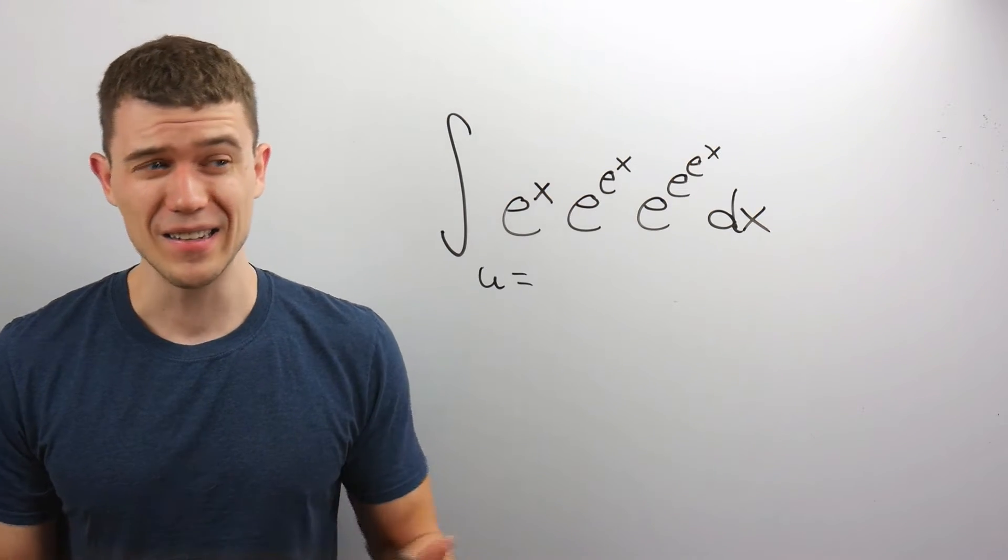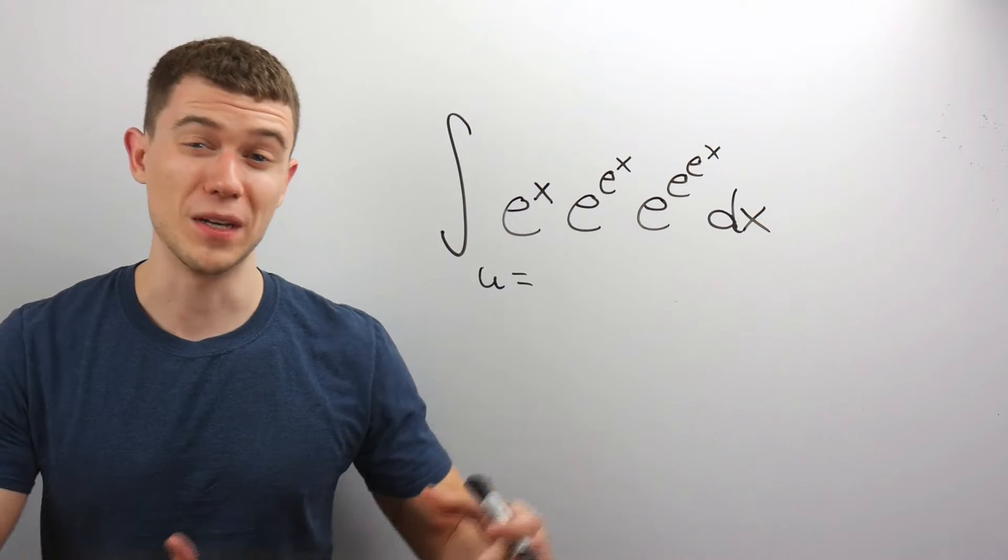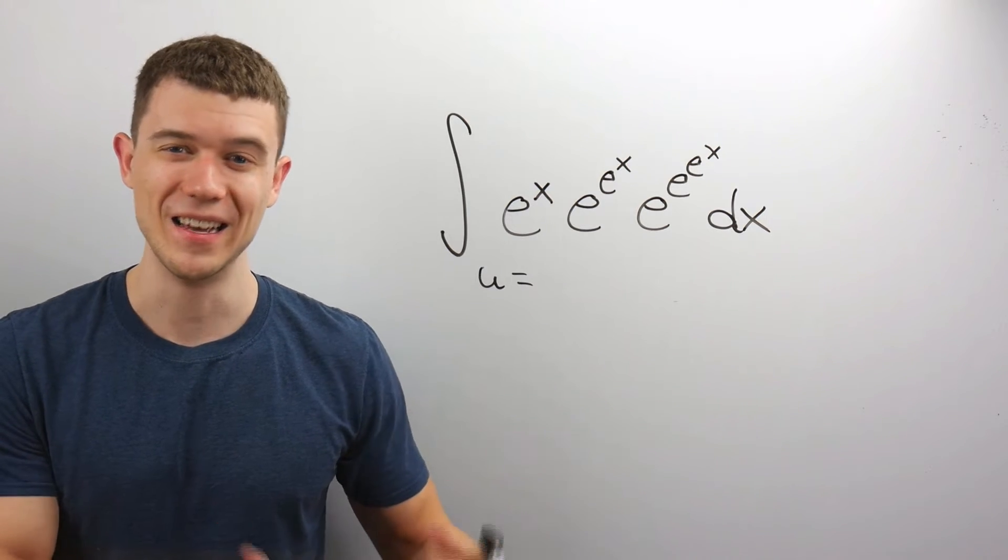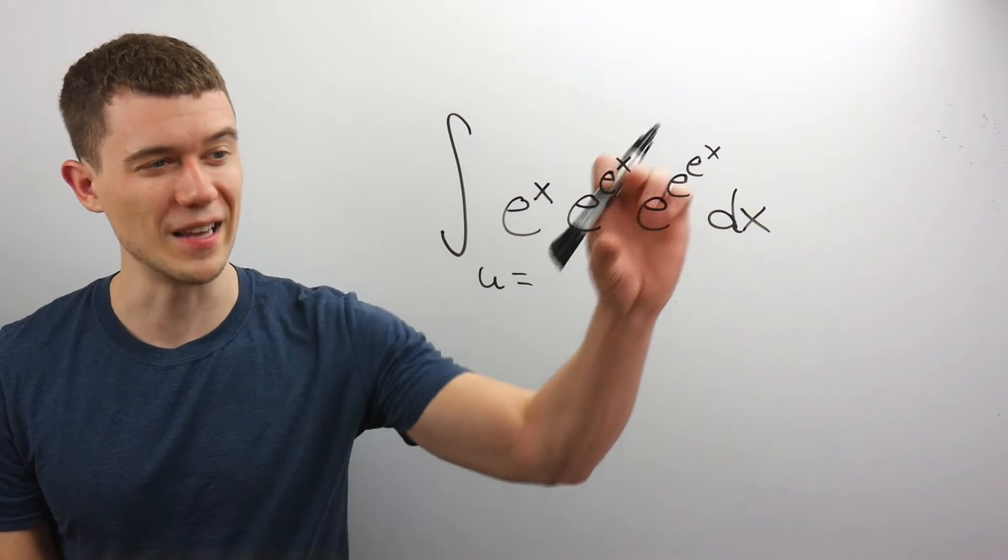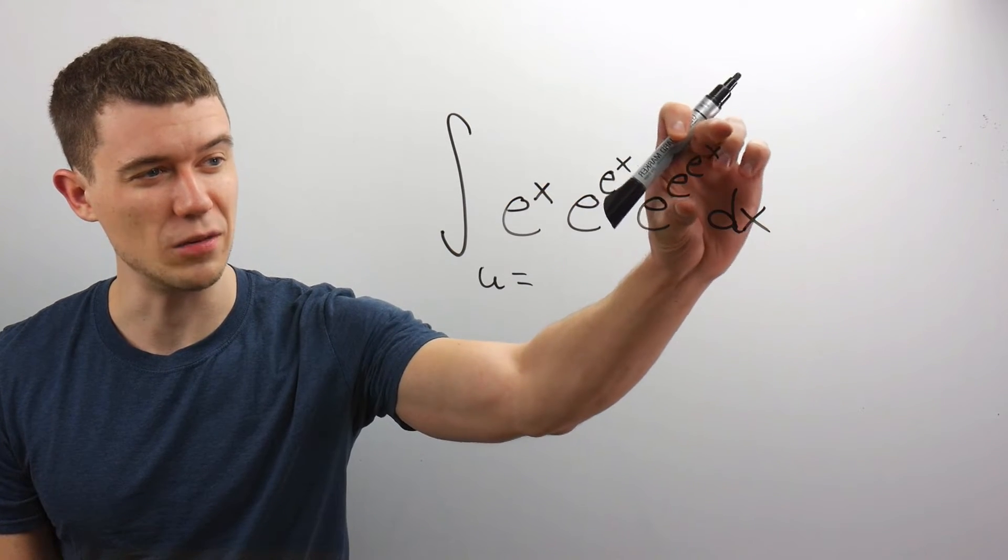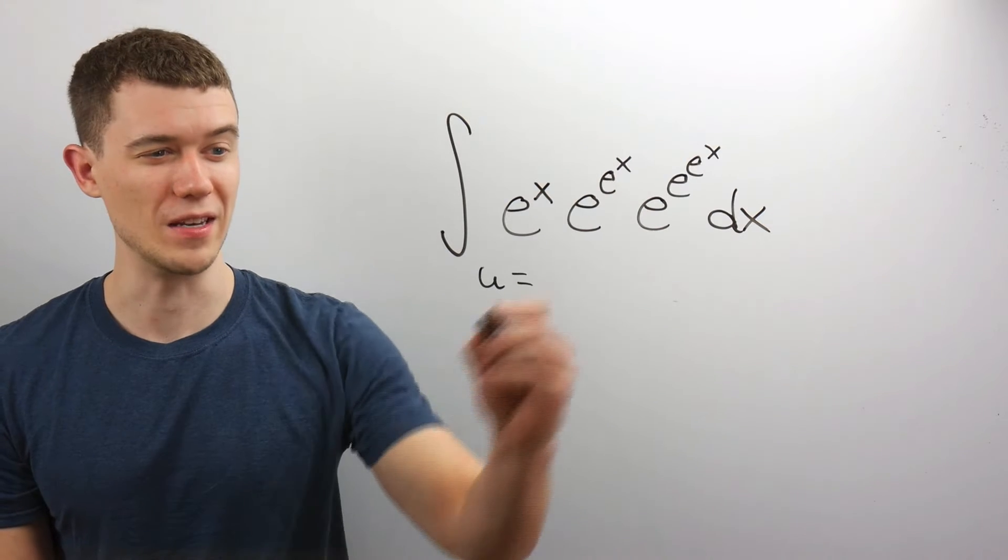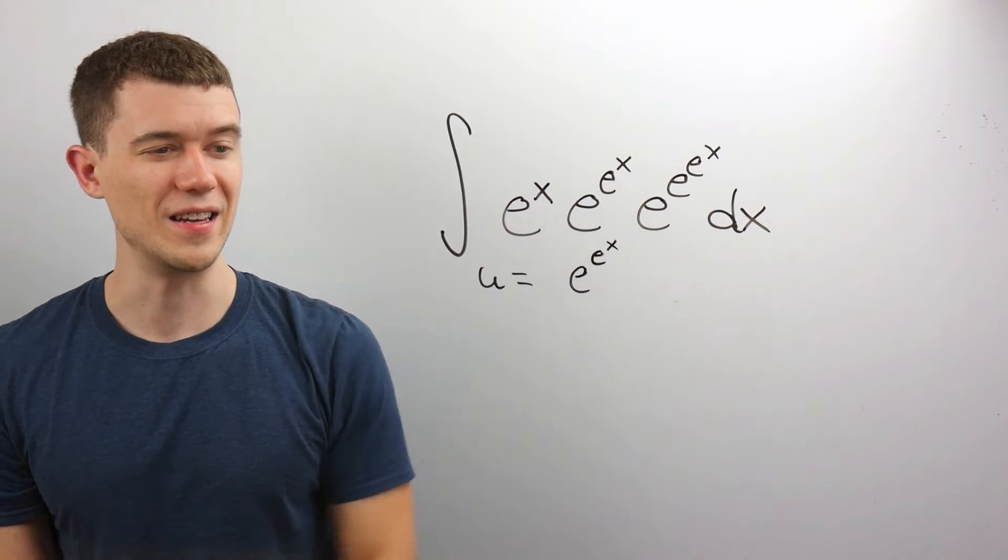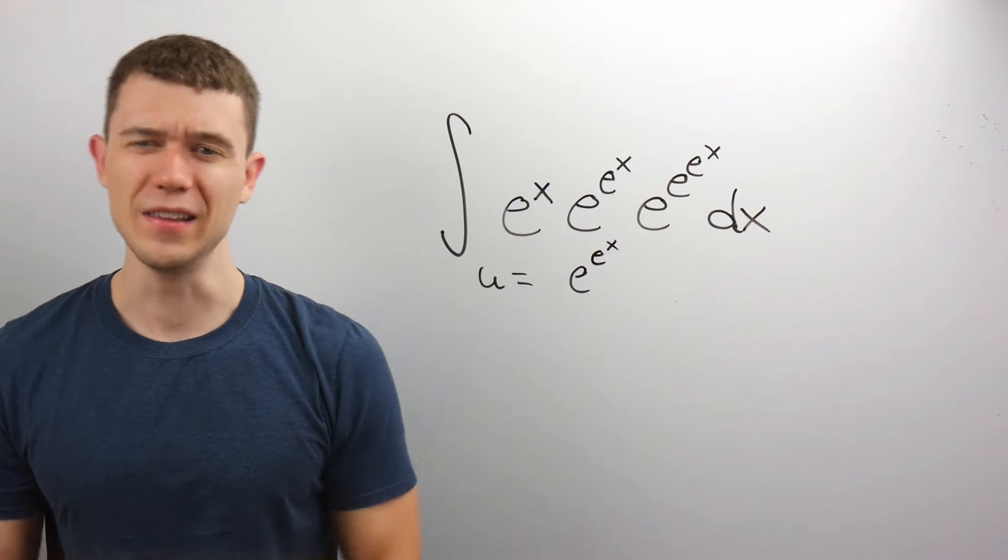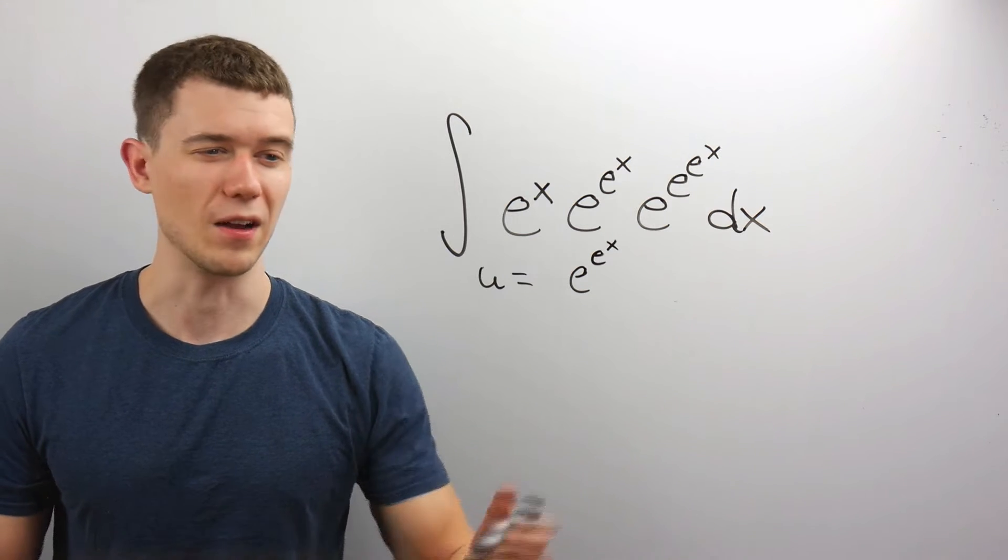It's all going to cancel out. A good rule of thumb is to pick the most complicated thing in the exponent of e. I think I'm going to select this exponent of e. I'll make u = e^(e^x), and let's just see what happens.